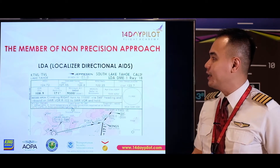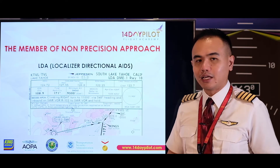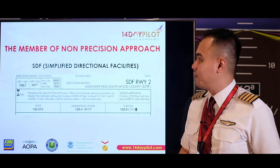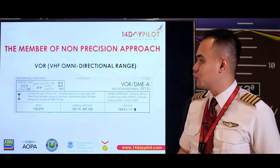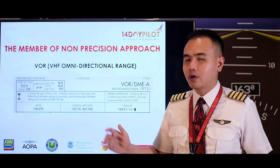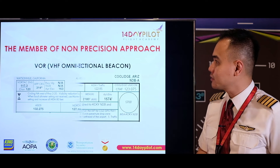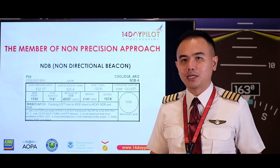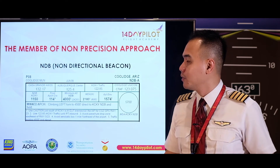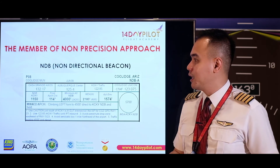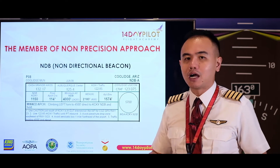Next is LDA — Localizer Directional Aid — like at Lake Tahoe and Van Nuys, which have localizer directional aids. Then SDF, Simplified Directional Facility. VOR is very common — VHF Omnidirectional Range — used at many airports, providing course deviation information but no vertical guidance. NDB, Non-Directional Beacon, is rare in the United States now, but you should know NDB is part of non-precision approach.